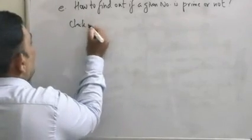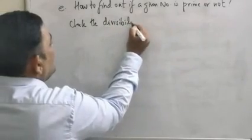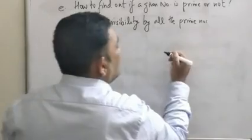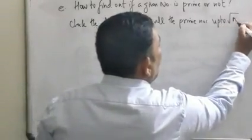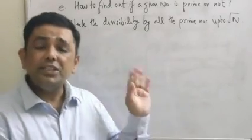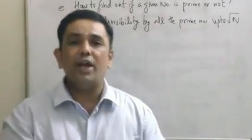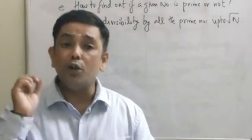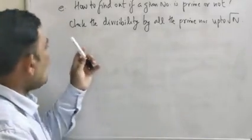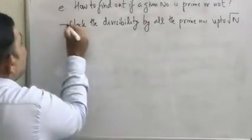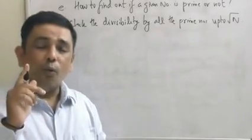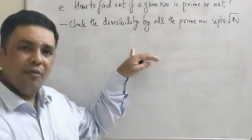But mathematically, that is not the easiest way. The easiest way mathematically is: check the divisibility by all the prime numbers up to the square root of that number. This is very interesting, and this is where I would like to share that one needs to be conceptually strong to perform well. The easiest way is: check the divisibility by all the prime numbers up to √N.